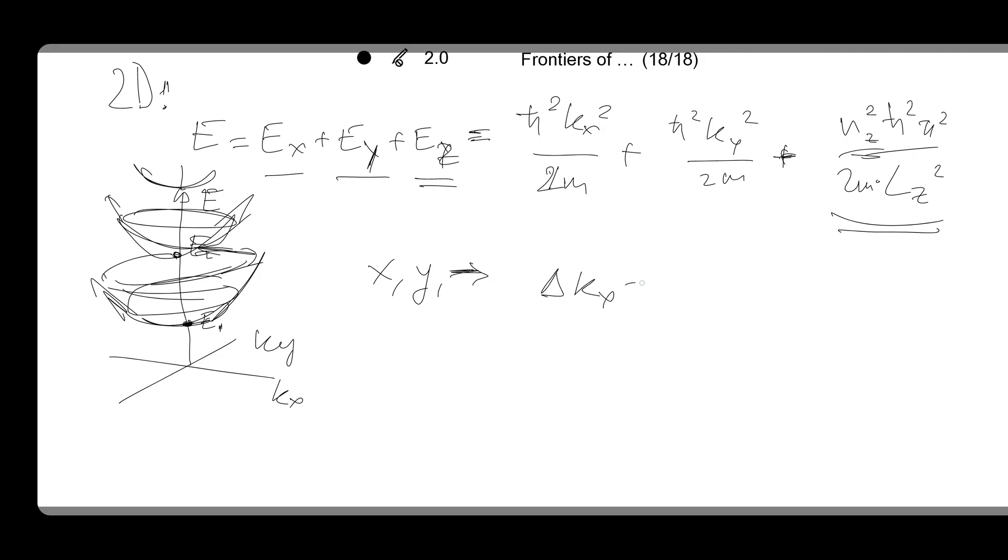So dkx equals pi over Lx, dky equals pi over Ly. These are very small values because Lx and Ly are macroscopic, they are very large. So these delta k's in x and y, they are very small.